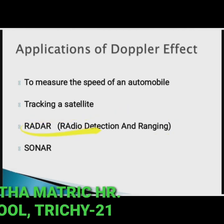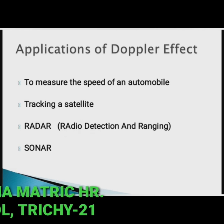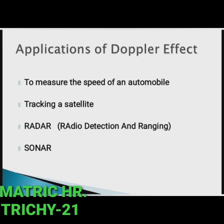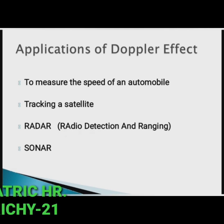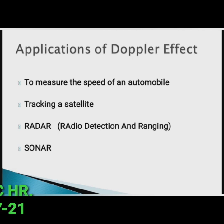Third, RADAR (Radio Detection and Ranging) — radio waves are sent and reflected waves are detected by the receiver of the radar station; from the frequency change, the speed and location of aeroplanes and aircraft are tracked. Fourth, SONAR — by measuring the change in frequency between the sent signal and the received signal, the speed of marine animals and submarines can be determined. These are the main applications of the Doppler effect.